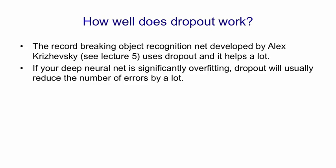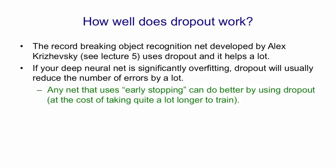In general, if you have a deep neural net and it's overfitting, dropout will typically reduce the number of errors by quite a lot. I think any net that requires early stopping in order to prevent it overfitting would do better by using dropout. It would, of course, take longer to train, and it might need more hidden units.